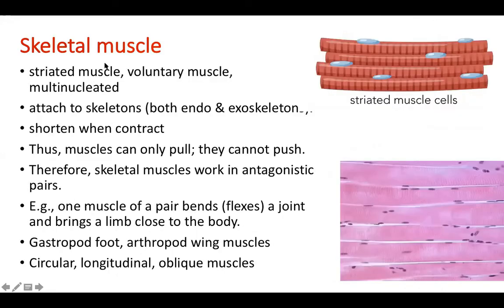Finally, you have skeletal muscles. These are the muscles attached to the endoskeleton or exoskeleton. You can see that striations are present. These cells are multinucleated — in one cell there will be many nuclei. These cells are also striated and are distributed throughout the body.